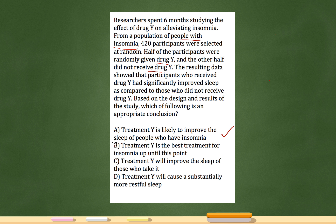Let me go through B, C, and D and explain why they're wrong. Answer B says treatment Y is the best treatment for insomnia. Try to avoid extreme wording such as 'best treatment.' Maybe there are other treatments that are better. Nowhere in this problem does it say this is the best treatment — there could be others we don't know about. So that's not a conclusion I can draw here.